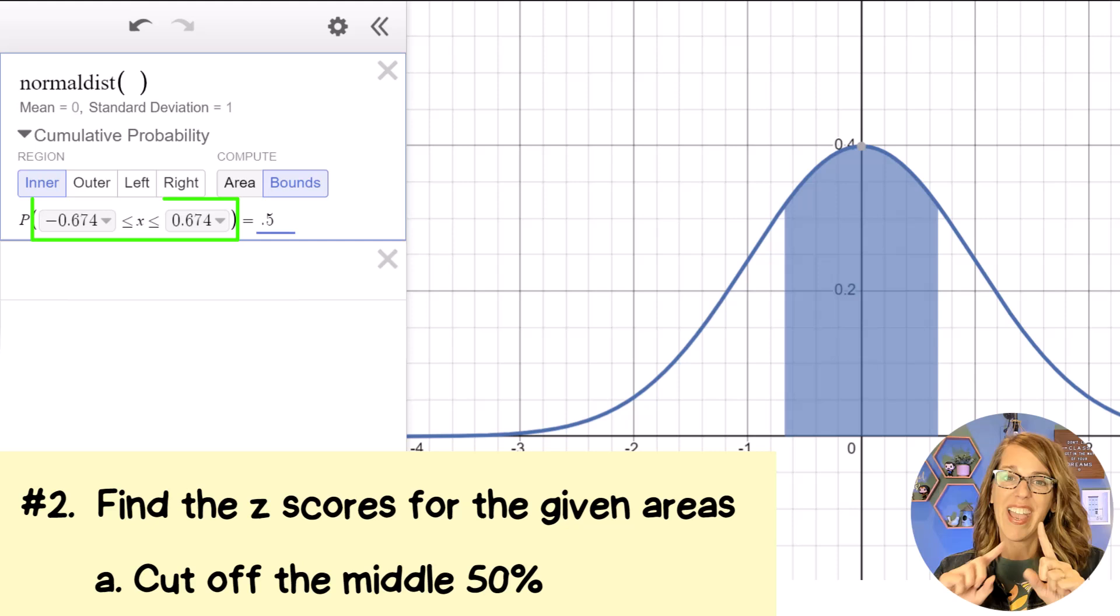And it gives me these are my z scores. So my z's are between negative 0.674 and positive 0.674.